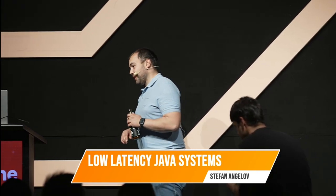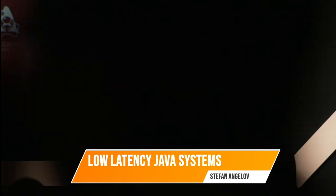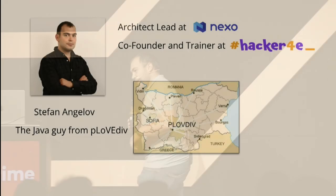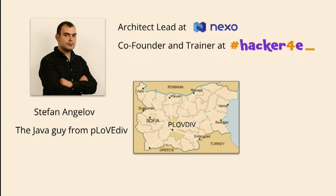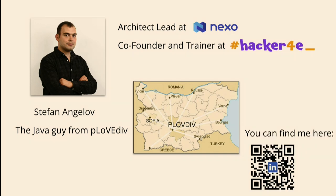This is me, probably. Currently I'm an architect with a company called Nexo. Also, I'm a co-founder and trainer at Hackerche — this is basically my academy. I started it a couple of years ago. We teach kids, not in Java, but probably next time. So I'm the Java guy from Plovdiv. Why Plovdiv? Because it's a beautiful city and there is a lot of beer there. If you want to find me, you can just scan the code and send me a message.